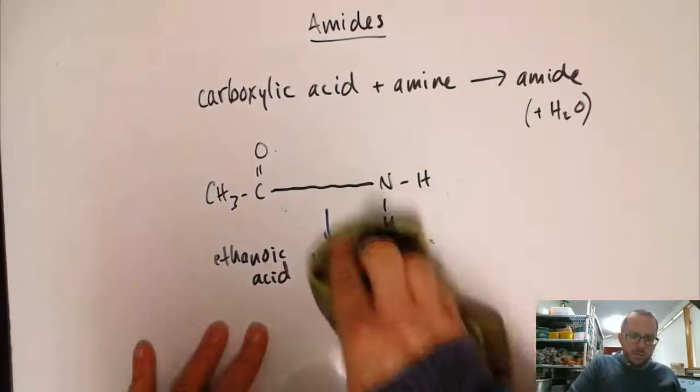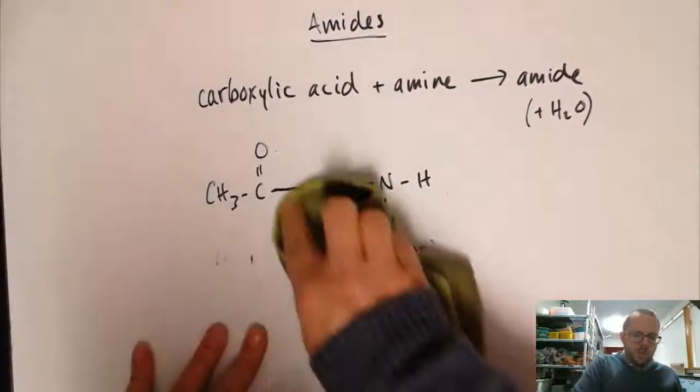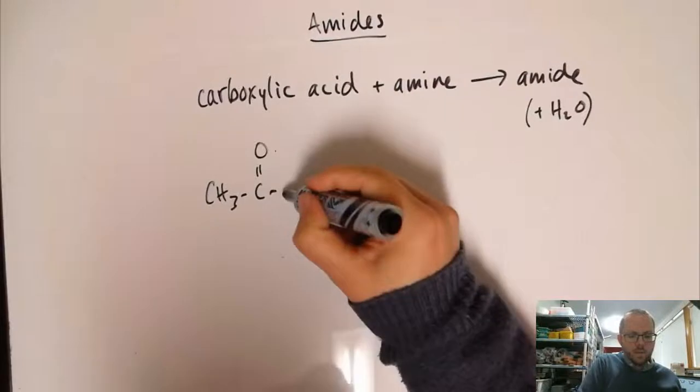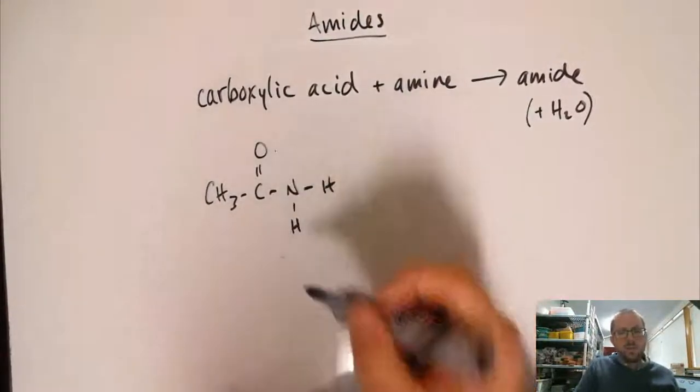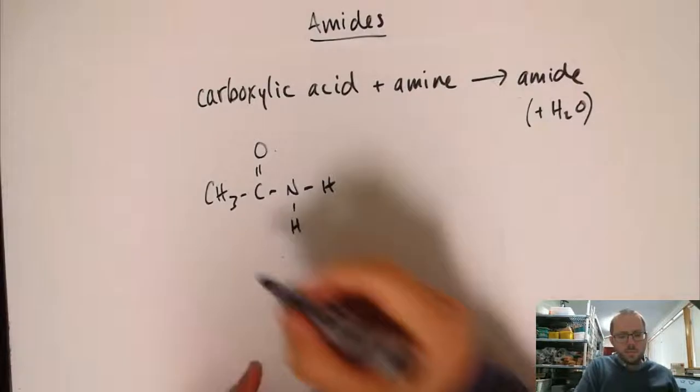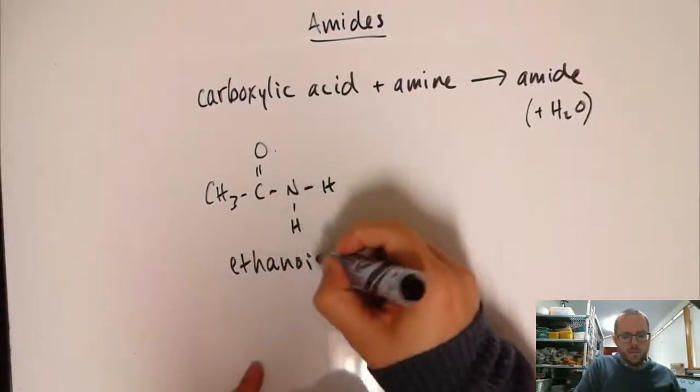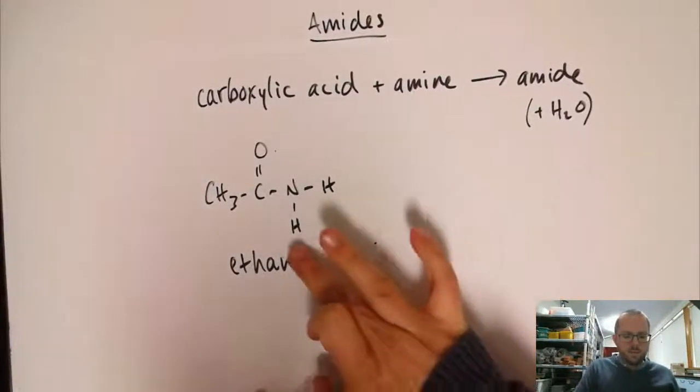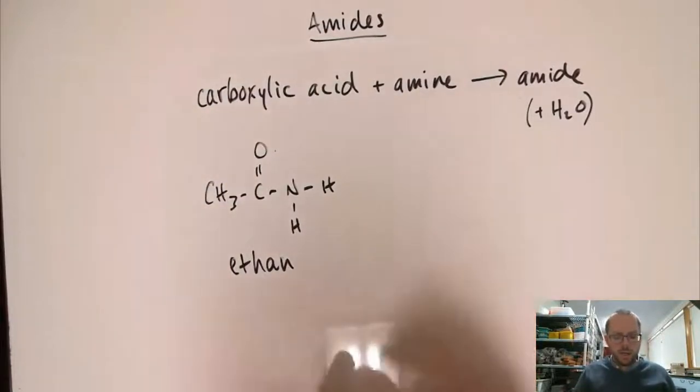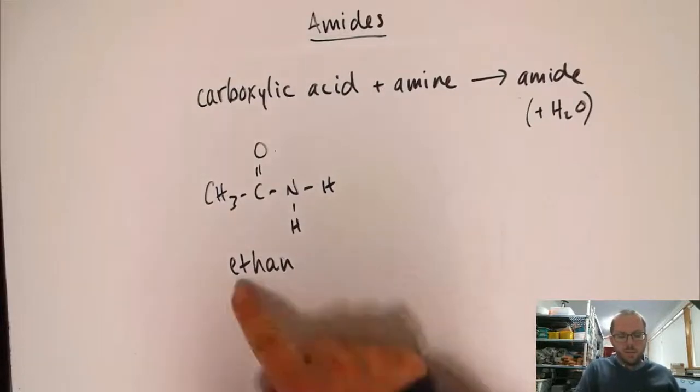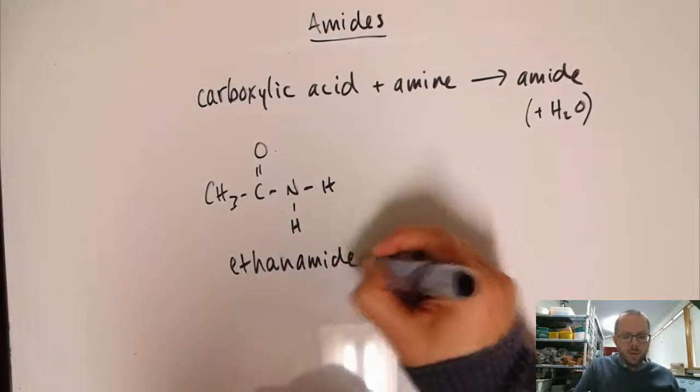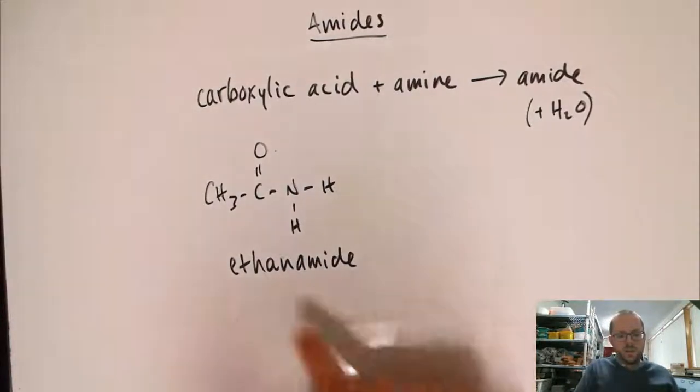If we look at this structure that we've just formed, we started off with ethanoic acid. We start with ethanoic acid as our original name, and we're going to drop the 'oic acid' part because it's not a carboxylic acid anymore. It's an amide, but it did originate from ethanoic acid, so we want to keep that bit because we've got a two-carbon group here, and in its place we put amide. We say that it's ethanamide.